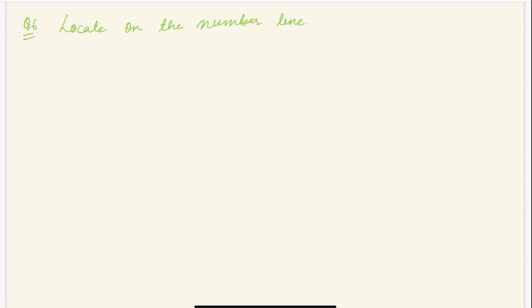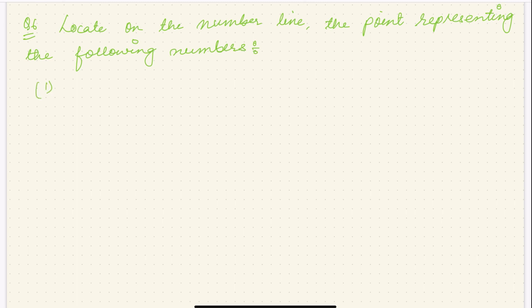We are doing Exercise 1.3, question number 6. The question says: locate on the number line the point representing the following number. Question number 6, row number 1 — it is 2√3.